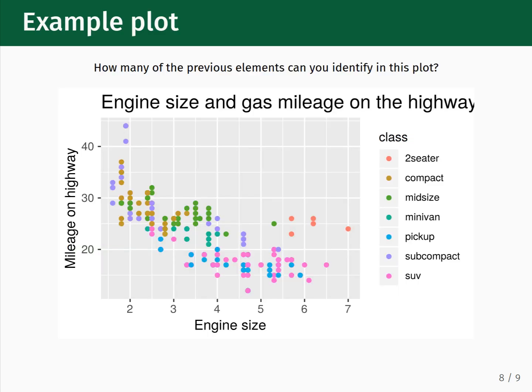Let's now apply these ideas to an example plot showing the trend between engine size and gas mileage on the highway for several different types of automobiles. For visual cues, we see position and color with the data points, showing us the gas mileage versus engine size trend across several classes of cars. The coordinate system shown here is Cartesian. The scale is linear along both the horizontal and vertical axes. For context, we have the plot title, the axes labels, and the legend on the right. As you're getting familiar with data visualizations, it's worth seeing if you can successfully break down and categorize the elements of other visualizations that you see.